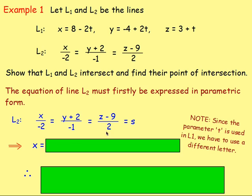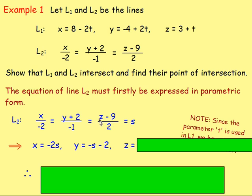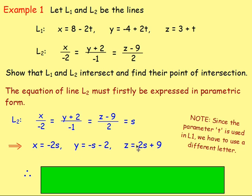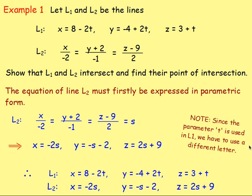To get x equals something in terms of s, multiply both sides by −2, giving x = −2s. For y, multiply both sides by −1 to get y + 2 = −s, then subtract 2: y = −s − 2. For z, multiply both sides by 2 and add 9: z = 2s + 9. So line 2 is now written in parametric form with parameter s, alongside line 1 in parametric form with parameter t.